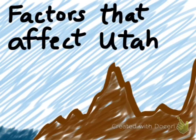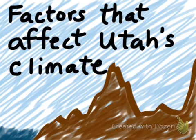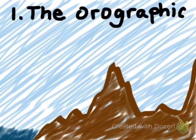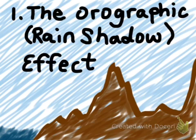Hello, this is Mr. Richens. Today we're talking about factors that affect climate in Utah. We're going to start with the orographic effect, also known as the rain shadow effect.